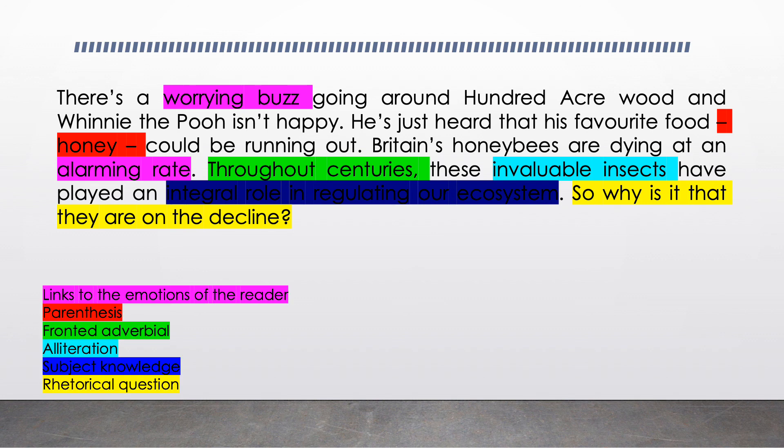And last of all, in dark blue we have subject knowledge — lots of bees playing an integral role in regulating our ecosystem. And in yellow at the end we have a rhetorical question, to engage the reader and make them think: will they be able to answer the question at the end of the introduction?